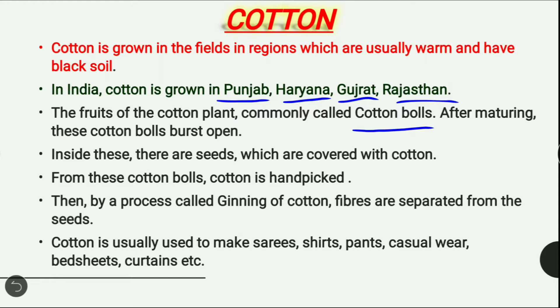After maturing, these cotton balls burst open. Inside these, there are seeds which are covered with cotton. The cotton is hand-picked. Then, by a process called ginning of cotton, fibers are separated from cotton seeds — the cotton fiber is separated from the seeds.